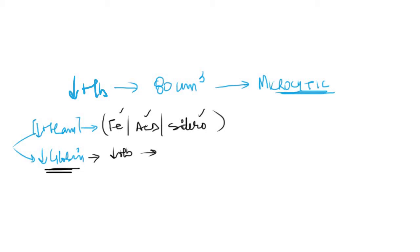Before I talk about the thalassemias, let's take on what are the normal hemoglobin chains and how adult hemoglobin is composed. The adult hemoglobin consists of 2 alpha chains and 2 beta chains which have united to form HbA.